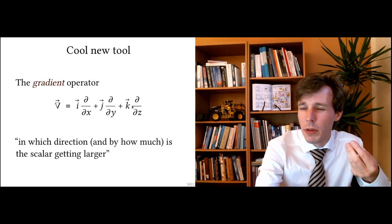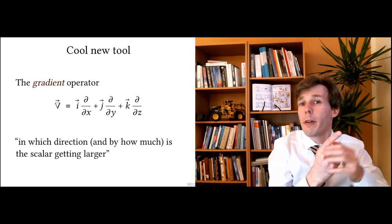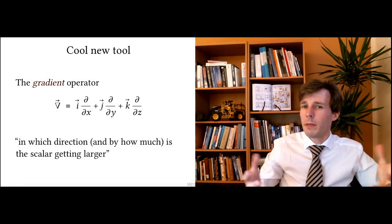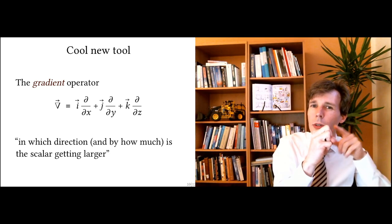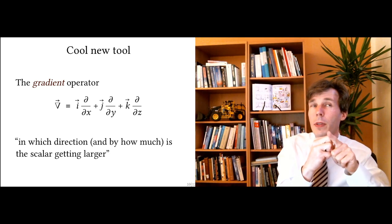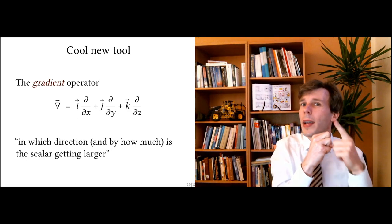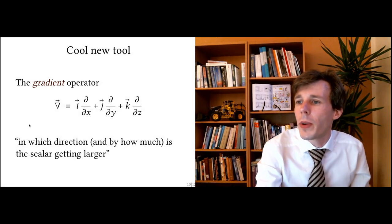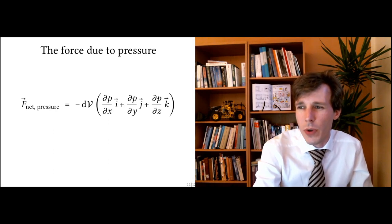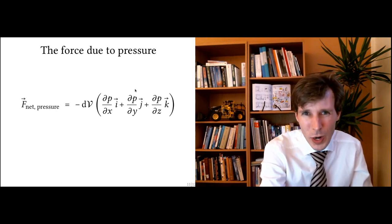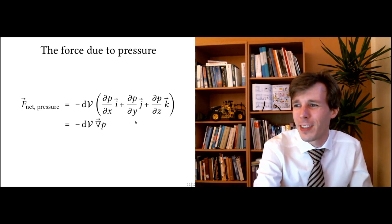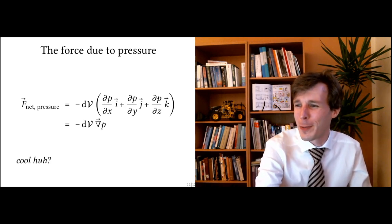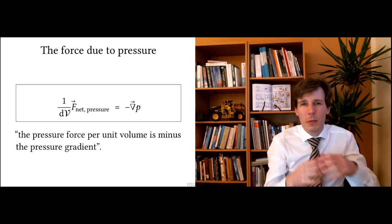The gradient operator shows in which direction and by how much the quantity you apply it to is getting larger. So if you have a field of values around you and you want to know the direction in which the value is highest, the gradient of that field will tell you. Now, we take the force due to pressure — that long, painful equation — and replace it with simply: minus the gradient of pressure, −∇p. This is very elegant.